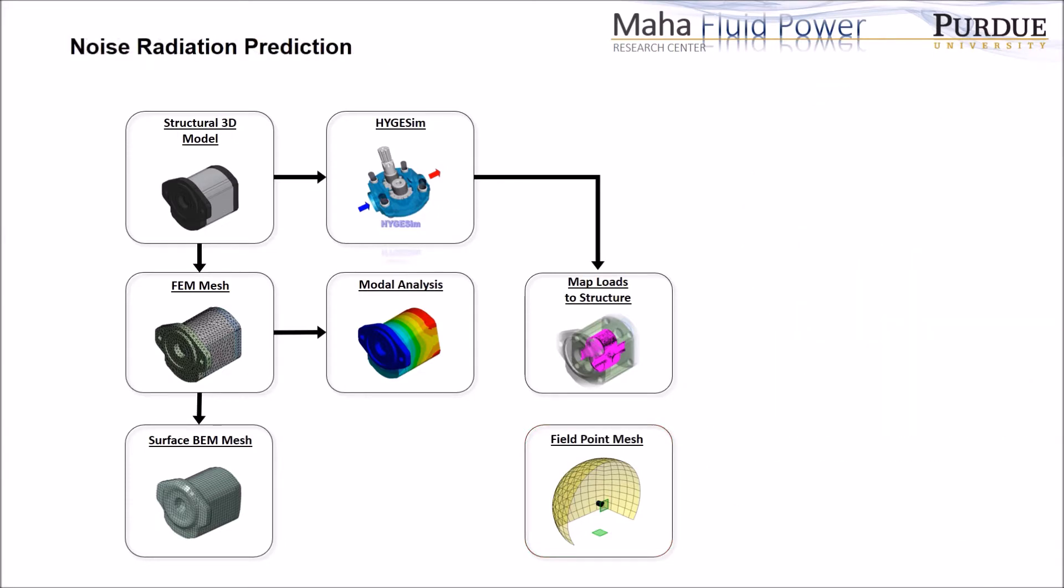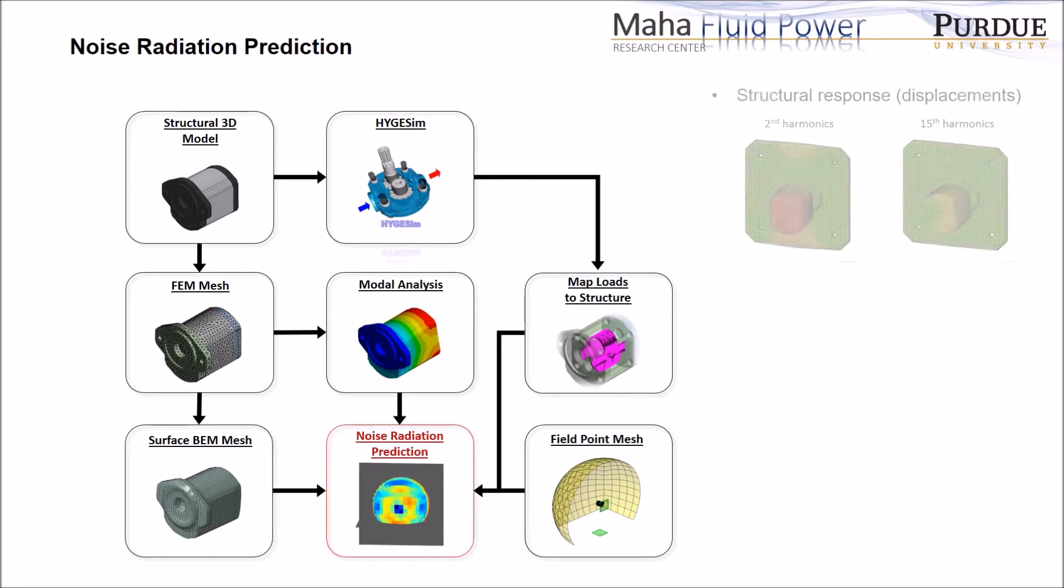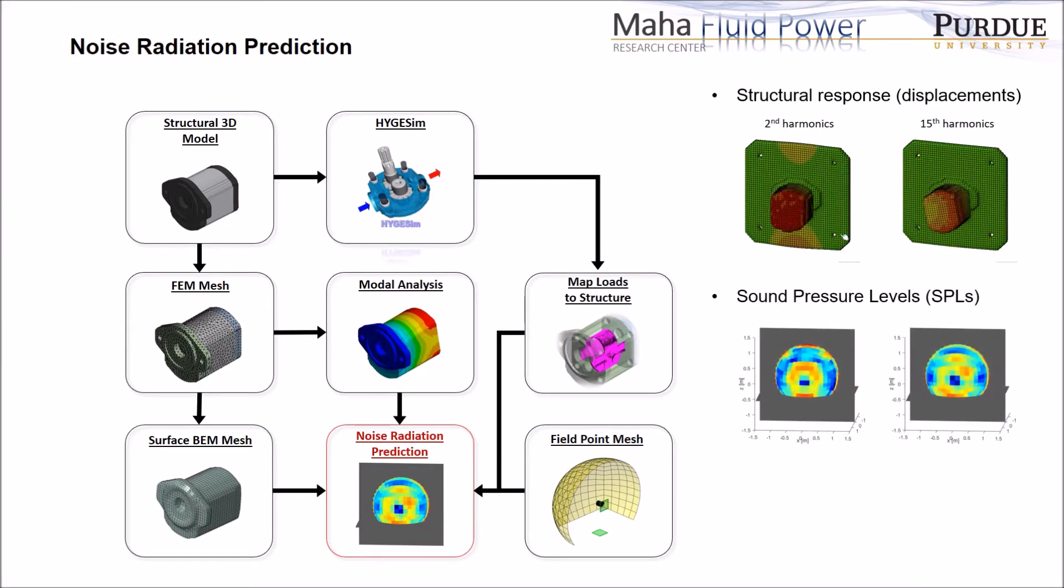Now, everything is ready for the noise radiation prediction. The main outcomes of the model are the structural vibration, sound pressure level distribution, and the sound power levels.